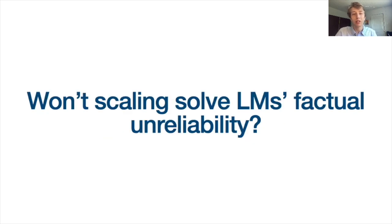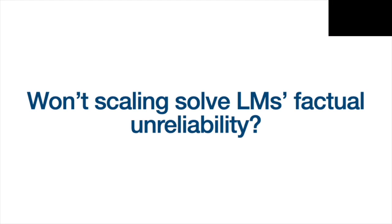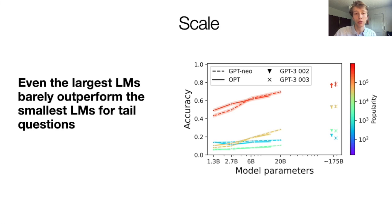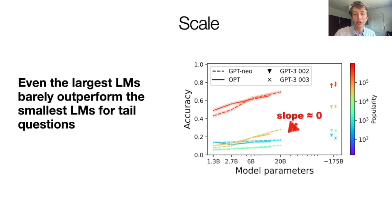Given that scaling has made significant progress on many hard problems, some might reasonably ask: won't scaling solve language models' factual unreliability? We find that scaling does improve performance, but primarily by improving memorization of more popular entities, and it fails to appreciably improve memorization in the tails for foreseeable model scales. Notice in the graph that for questions about the least popular entities, shown in blue, the improvement in memorization caused by model scale is near zero. Instead, scaling's effect is better understood as shifting down a soft threshold on popularity above which the language model is likely to have memorized the fact.